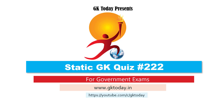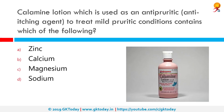Calamine lotion, which is used as an anti-pruritic or anti-itching agent to treat mild pruritic conditions, contains which of the following? Correct answer is zinc. Calamine, also known as calamine lotion, is a medication used to treat mild itchiness. Calamine is a combination of zinc oxide and 0.5 percent ferric oxide. The lotion is produced with additional ingredients such as phenol and calcium hydroxide.